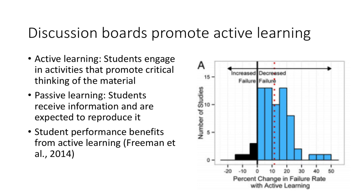The average decrease in failure with active learning is indicated with the red dotted line. On average, 12% fewer students failed the course when active learning was involved. There are similar findings when looking at measures such as exam scores, paper scores, or overall course grades.